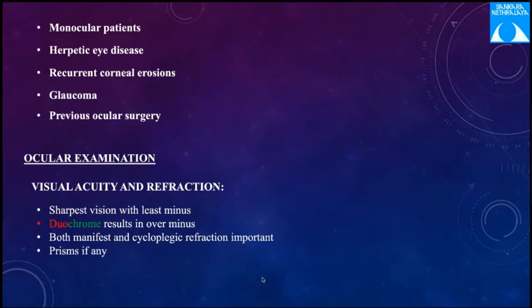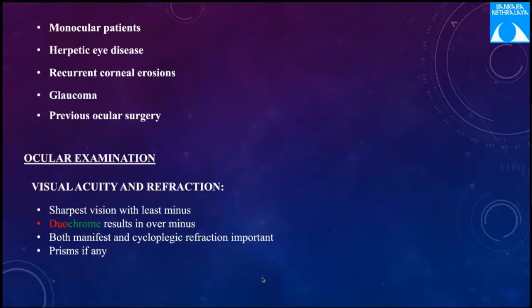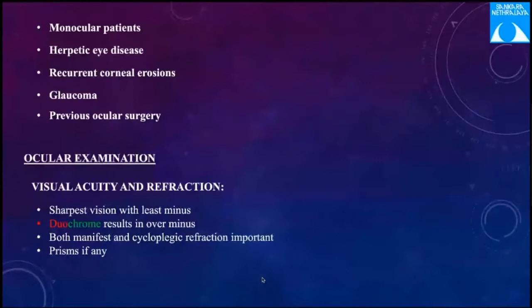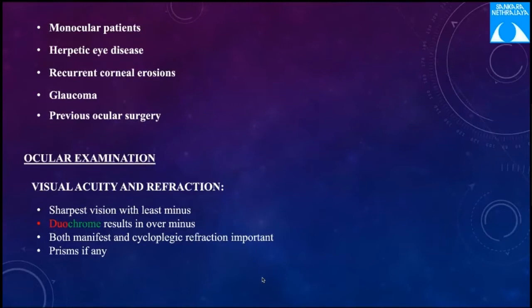For monocular patients, concerns include the risk of ectasia and regression, and if the patient develops haze, it affects the only seeing eye. However, monocular LASIK is performed in situations where the other eye requires ICL or cataract surgery, making LASIK the appropriate choice. Each contraindication has a little twist — that is the key point.